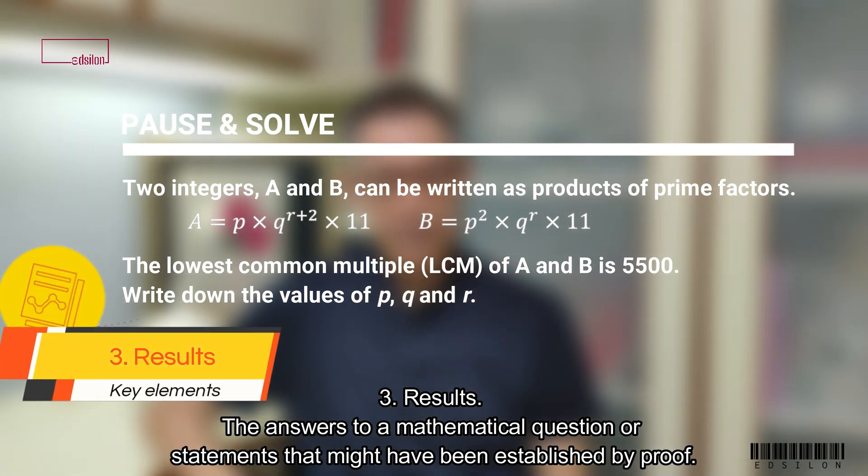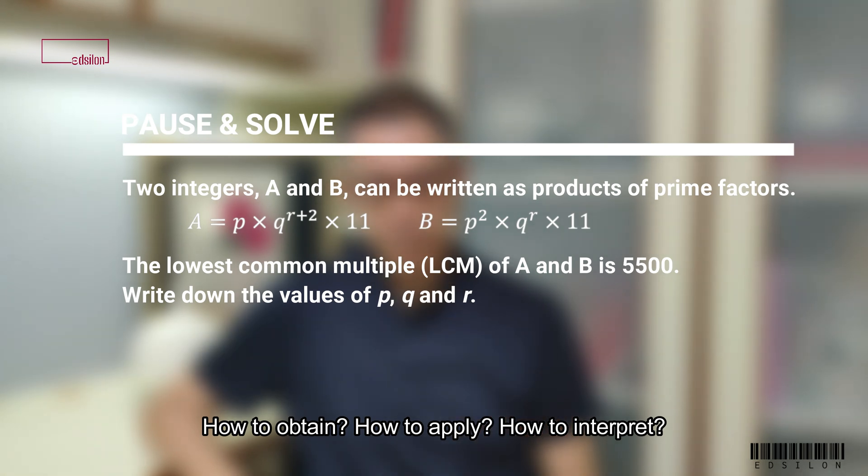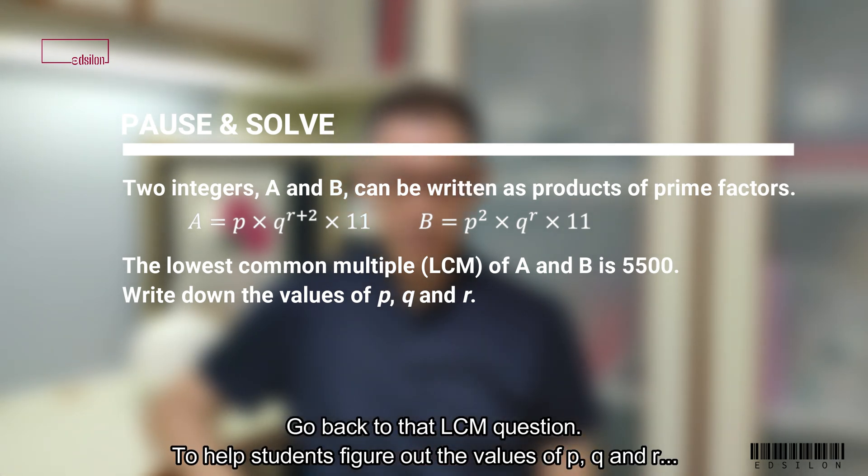3. Results. The answers to a mathematical question or statements that might have been established by proof. How to obtain. How to apply. How to interpret. Go back to the LCM question.